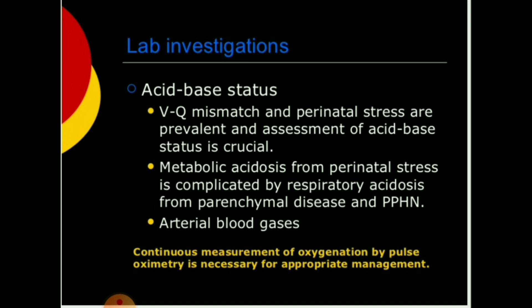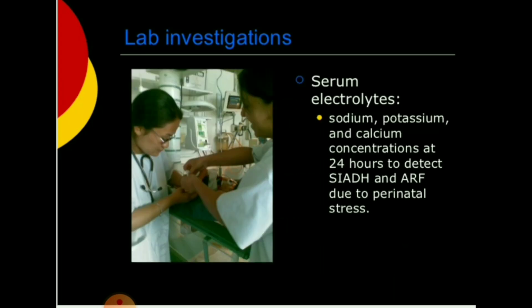Lab investigations: Metabolic acid-base status should be assessed, as metabolic acidosis from perinatal stress is complicated by respiratory acidosis from parenchymal disease and PPHN. Arterial blood gases and continuous pulse oximetry are necessary. Serum electrolytes — sodium, potassium, and calcium — should be checked at 24 hours to detect SIADH and acute renal failure due to perinatal stress.